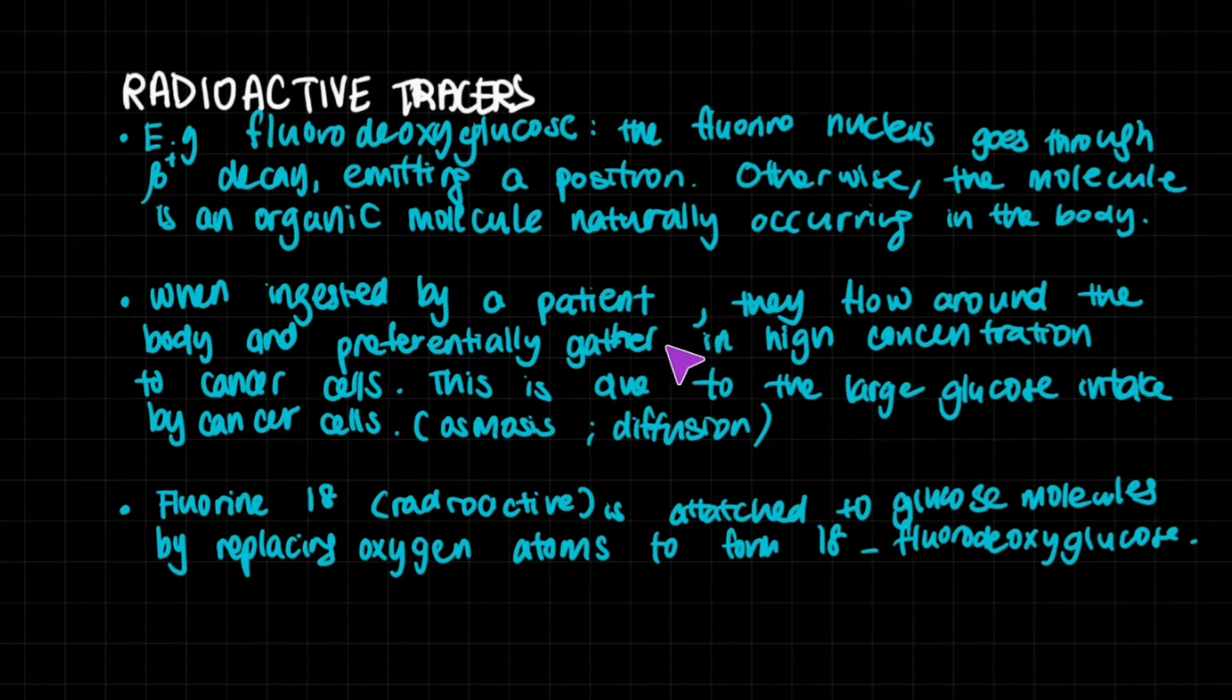The radioactive tracer will flow around the body and it will preferentially gather in high concentrations to cancer cells. This is because of the large glucose intake by cancer cells. Cancer cells will take in more glucose because they grow extremely fast. The glucose concentration around cancer cells is going to be lower, which means even more glucose will keep gathering around cancer cells.